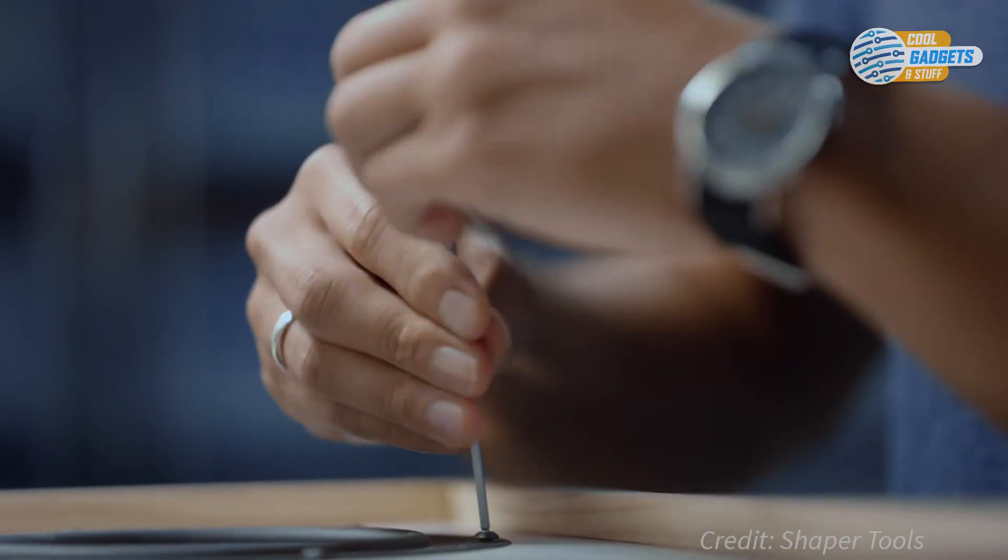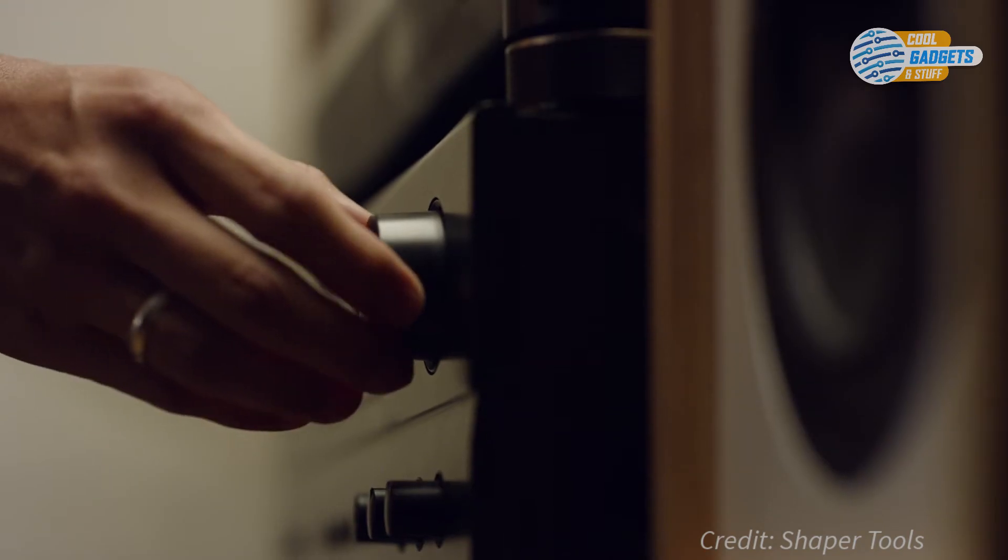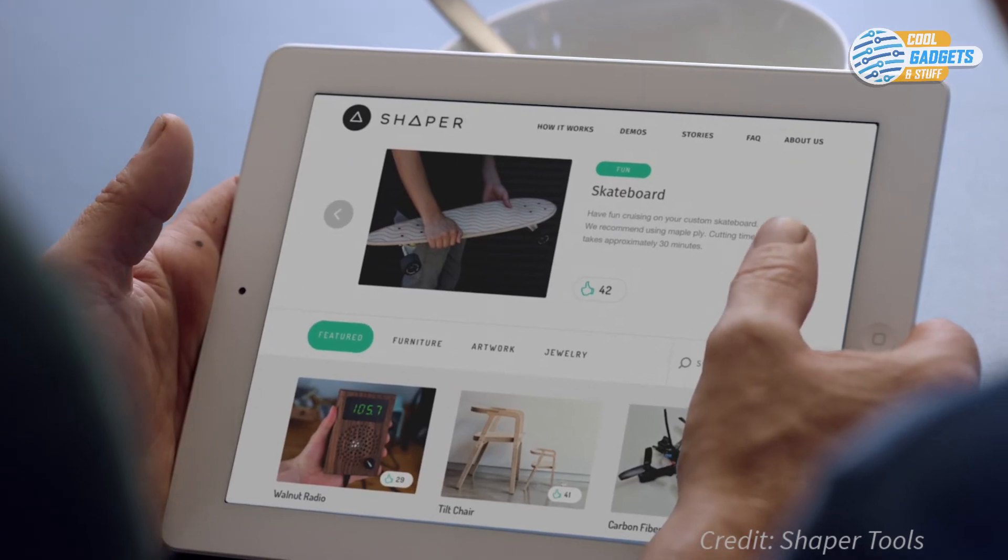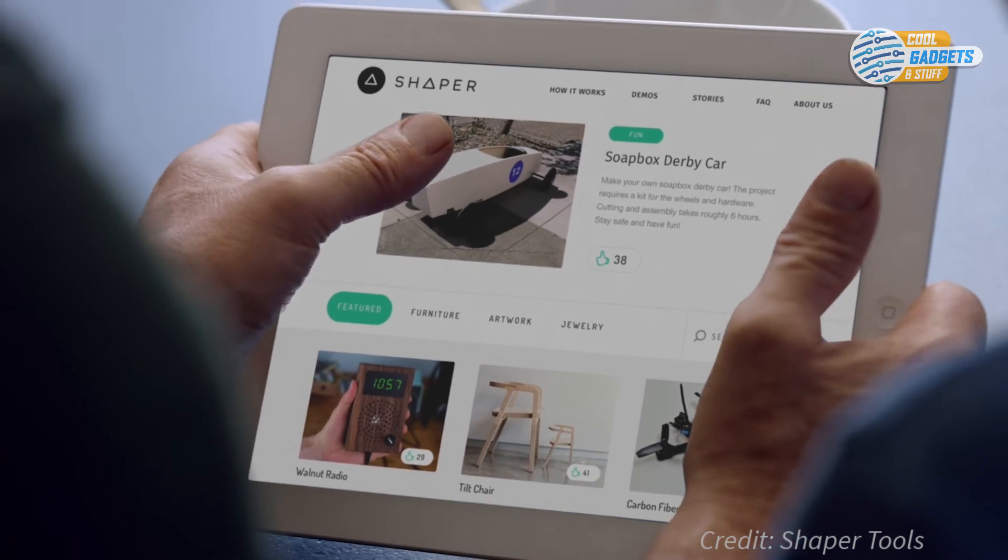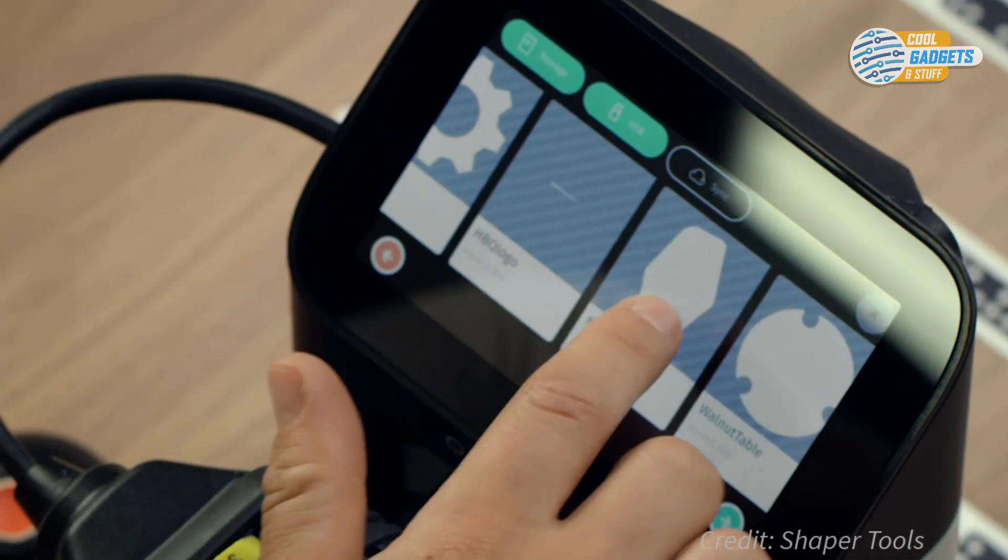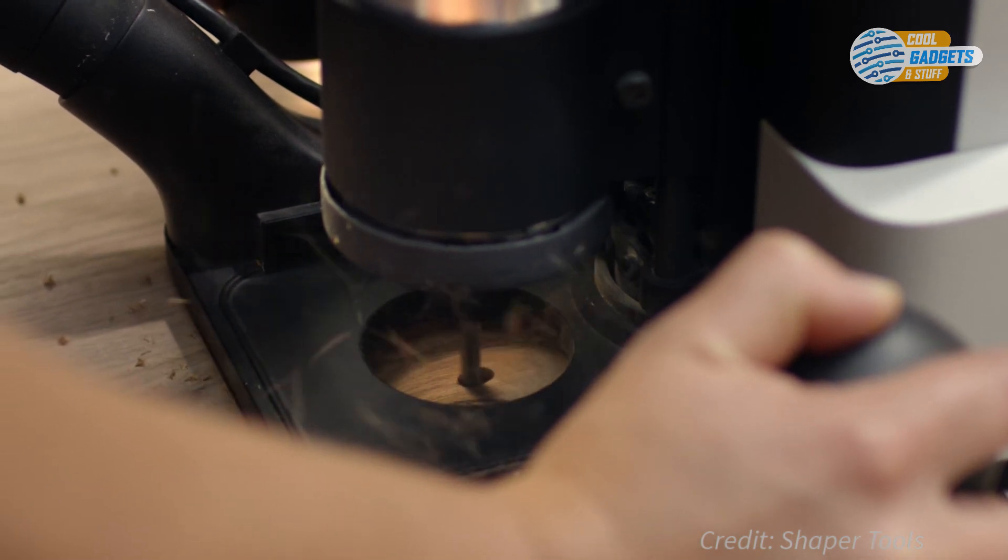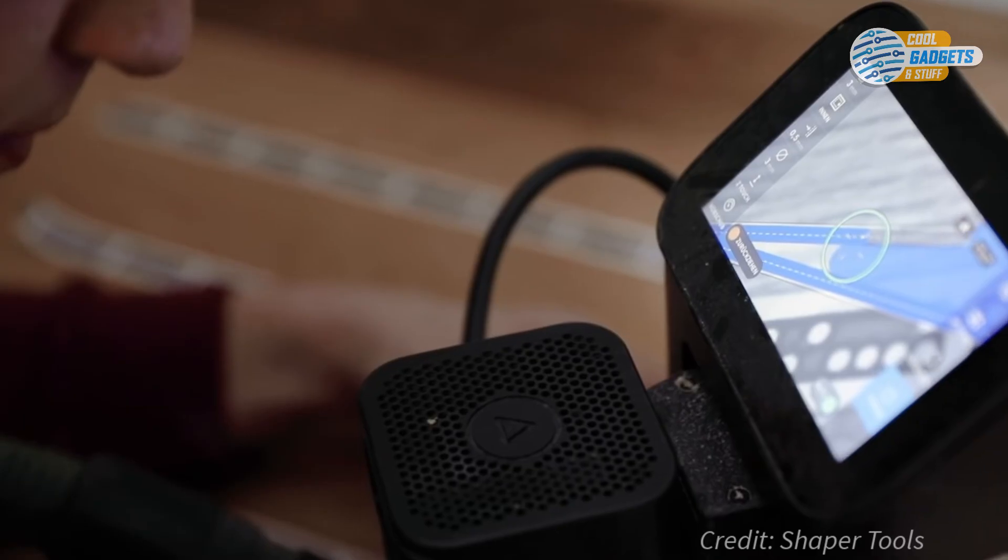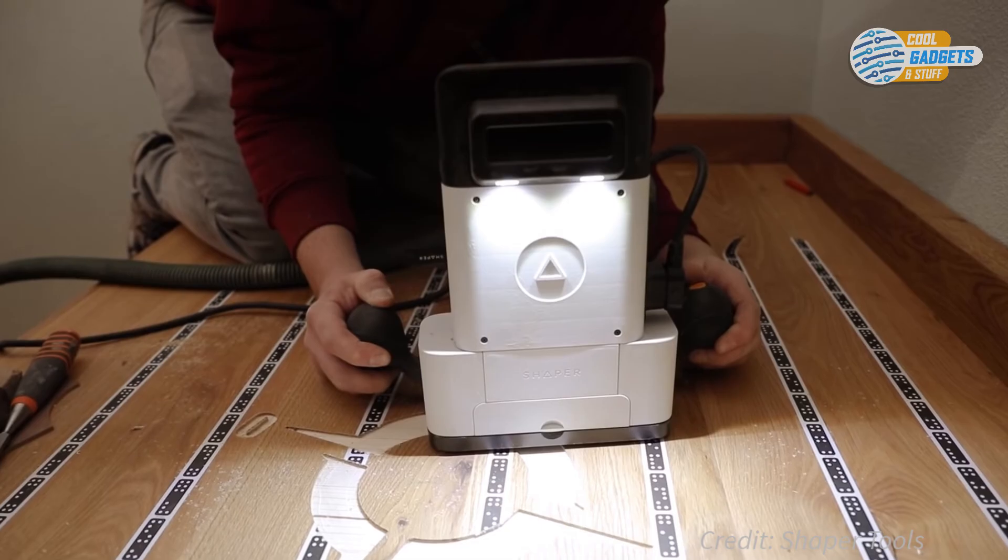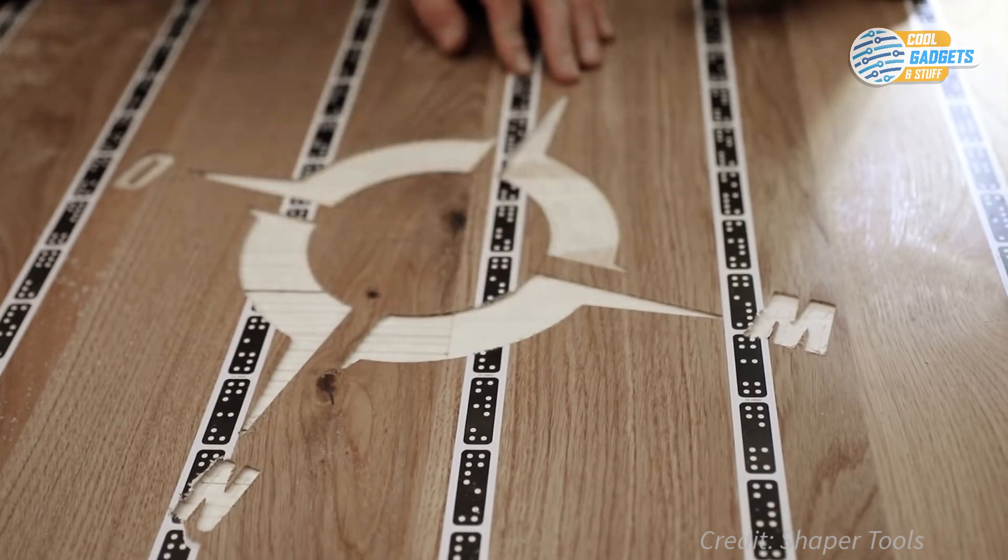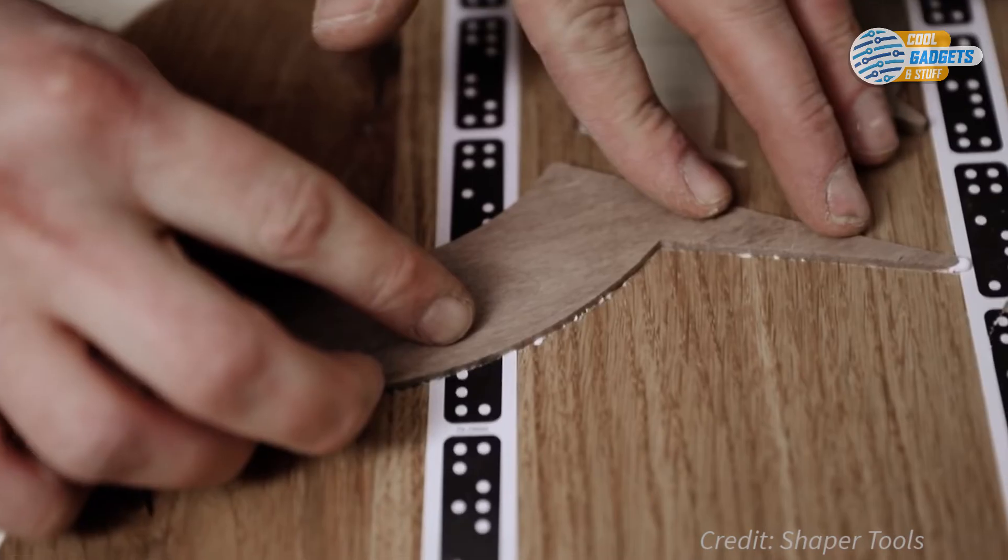The Origin takes your standard design files from any design software, or you can download design plans from the ShaperHub online library. You can also design with the tool itself, directly on the workpiece via the touch screen. Add sophisticated elements and handcrafted details to solid wood projects and bespoke furniture. Build templates, engrave, and cut unique joinery with ease and precision.